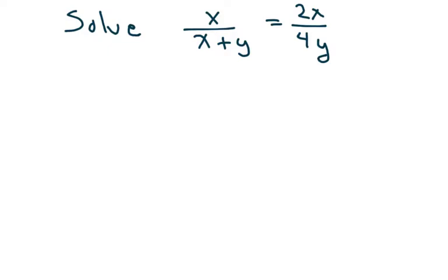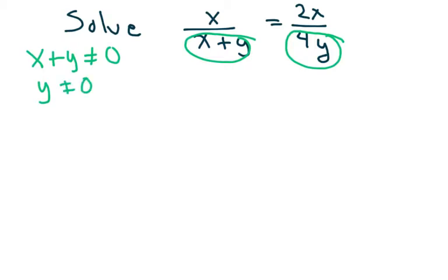And we're going to do one more. So here, we're going to solve x over x plus y equals 2x over 4y. So the first thing I want to do is check for my restrictions. So I know here that x plus y cannot be 0. And for here, this denominator, y cannot be 0, because that would make my denominator 0. So that's what I'm going to be looking at when I get my final answer.